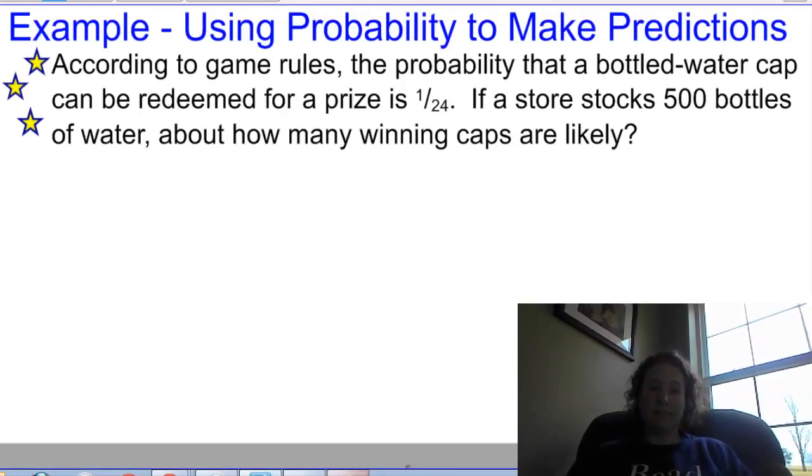I have two examples. We are going to show how to use theoretical probability to make a prediction and then also how to use experimental probability to make a prediction, and I'm going to give you a couple opportunities to try this out on your own.